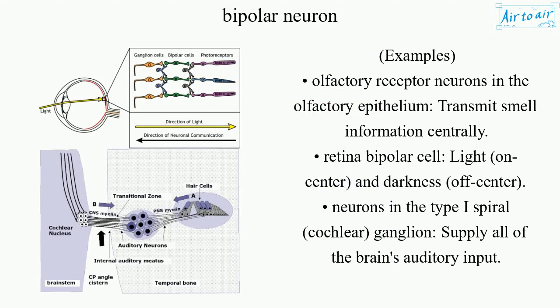Examples: Olfactory Receptor Neurons in the olfactory epithelium transmit smell information. Centrally, retina bipolar cell — light on center and darkness off center.